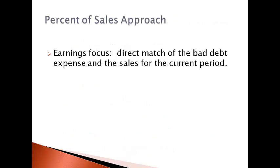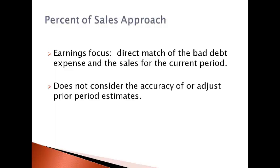The percent of sales approach is generally used at the end of each month because it is the quickest and easiest method to use and gives a fairly accurate estimate of only that month's earnings. This approach gives fairly accurate earnings for one period. However, it does not always give a good estimate of the allowance account and the total net accounts receivable because it does not consider the accuracy of prior period estimates. Because of this, it is most often used for internal financial statements.